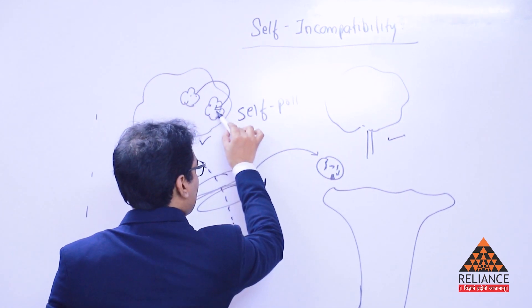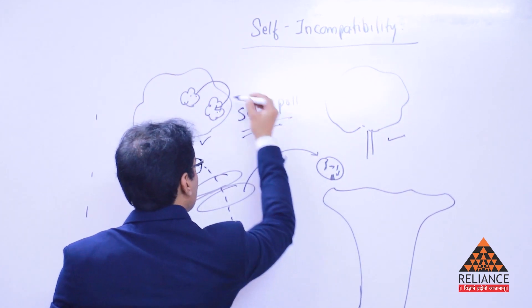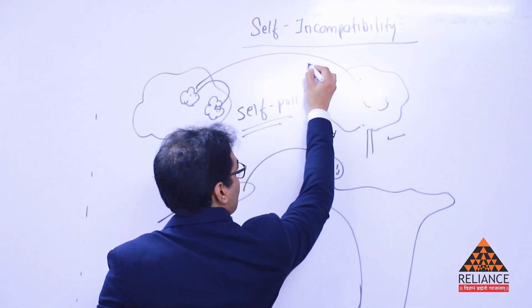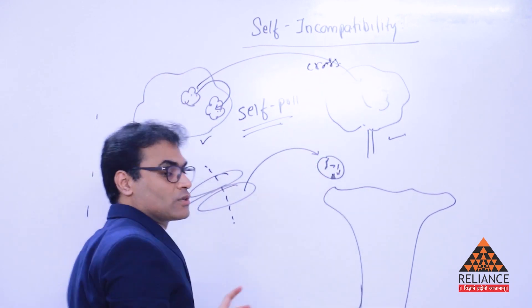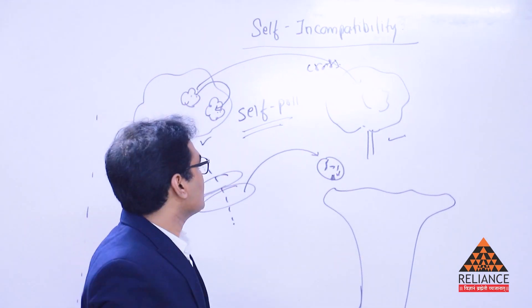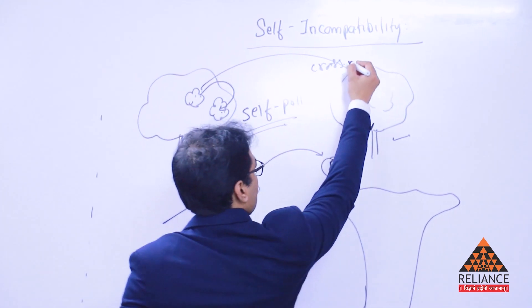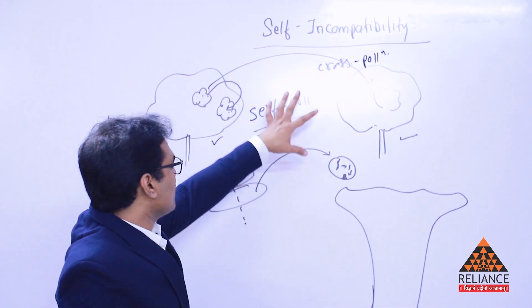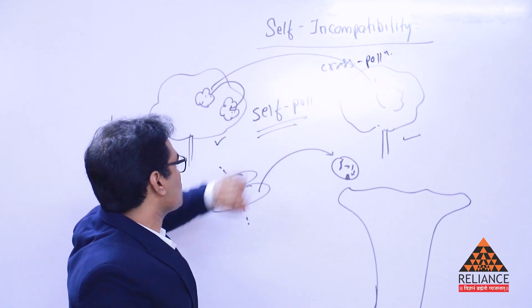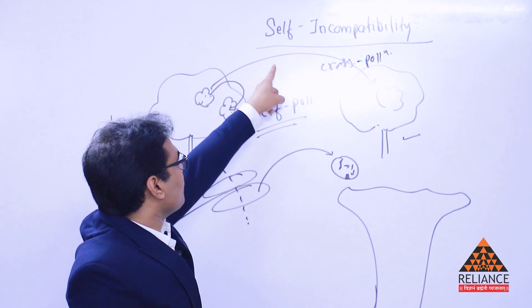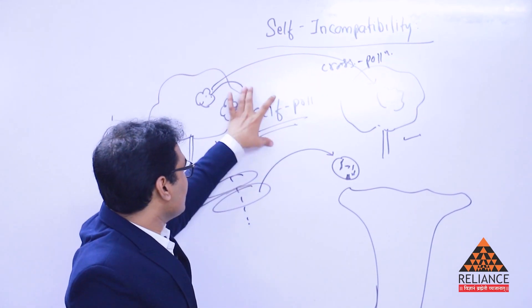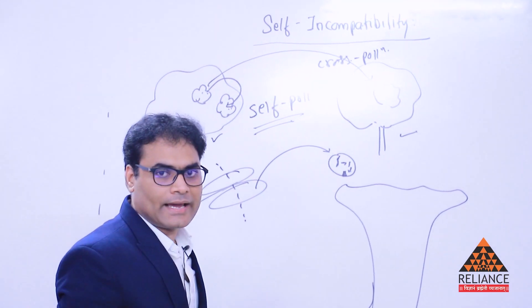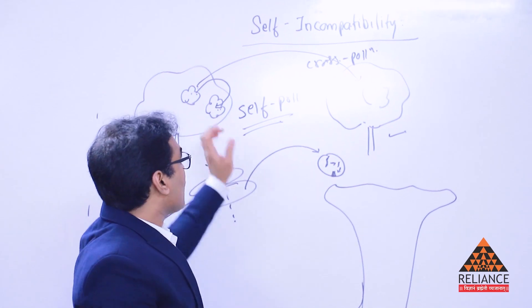So from one flower to another flower here, this is self-pollination. But if it had come from here to there, to its flower, this would have been the crossing, or the term will be coming later in detail. Let's simply call it cross-pollination. This is your cross-pollination. Now this cross-pollination you have to allow. This one has to be stopped. Means self has to be made incompatible. Self is incompatible.